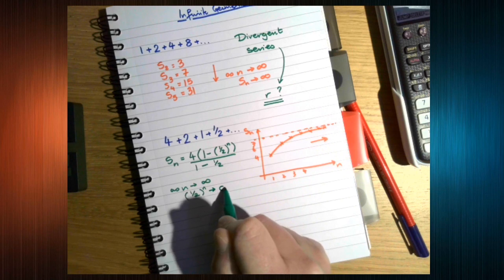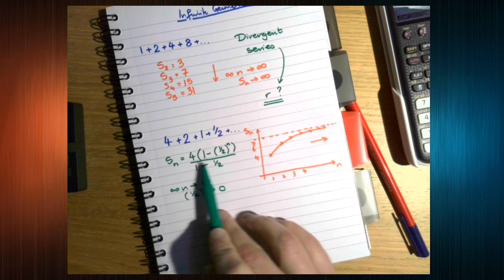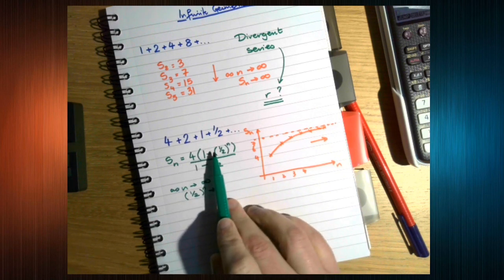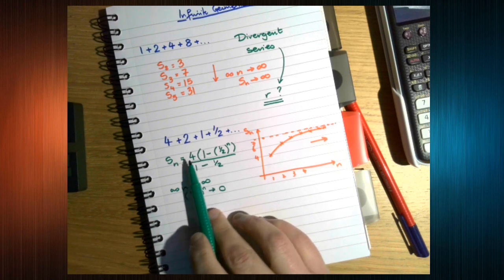This becomes 0, which means the numerator changes, becomes 4 times 1.